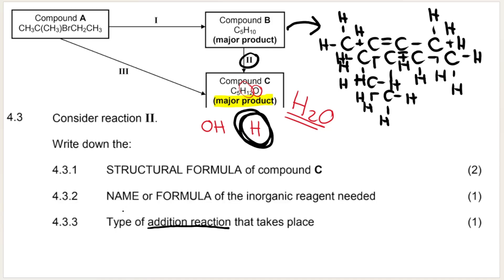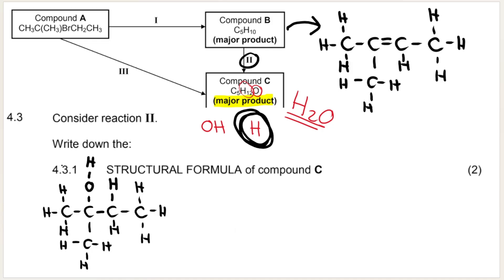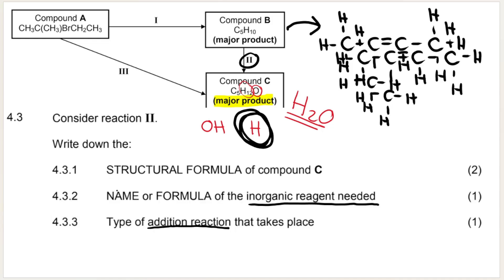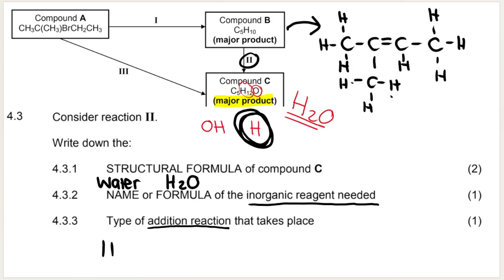Then our next question says, name or formula of the inorganic reactant or reagent needed. Well, how are we going to create alcohol? What do I need? I need water. So if you want to say the name, you say water, or if you want to give the formula, you say H2O. Remember, if the question only asked for the name and I said H2O, I would get it wrong. So you need to read the question here. They asked for either or. Write down the type of addition reaction that takes place. Adding water is called hydration. That is just something you need to learn. If you add water, you are hydrating.